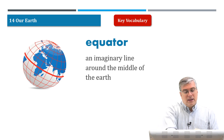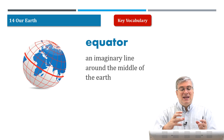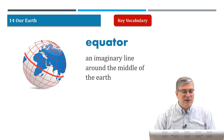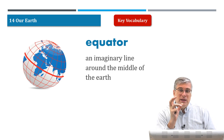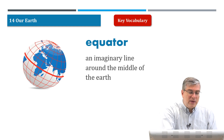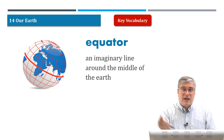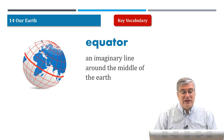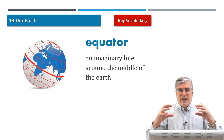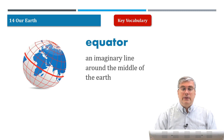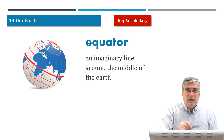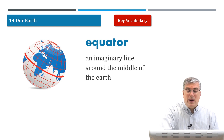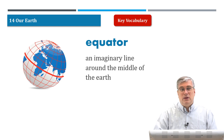The equator goes around the fattest part of the earth. The earth isn't a perfectly round sphere — it bulges out a little at the middle because of the way it spins and the gravity exerted on it. At that area, we call it the equator. The equator separates the northern and southern parts of the earth: if you are north of the equator, you are in the northern hemisphere; south of the equator, you're in the southern hemisphere.